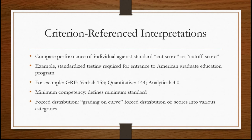Another criterion-referenced interpretation is forced distribution — you might have heard of this as grading on a curve. If we have 20 people in a class, we might force their scores into a curve: one person gets a 10, three get a 9, six get an 8, maybe eight get a 7, and two get a 6. So we distribute the scores into various categories.